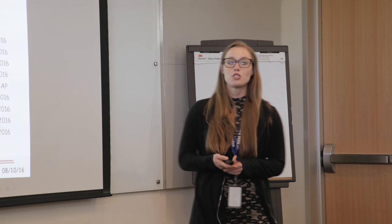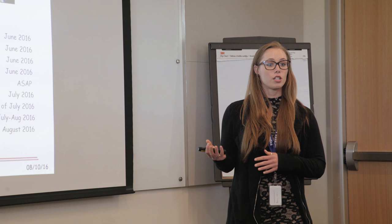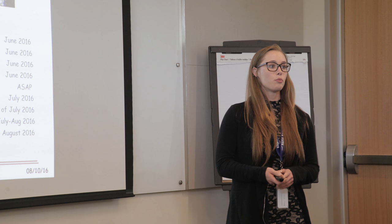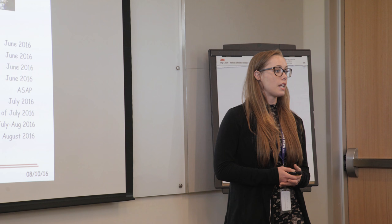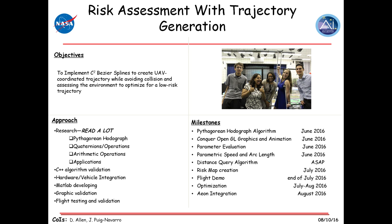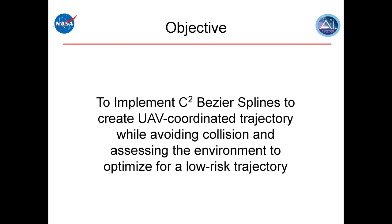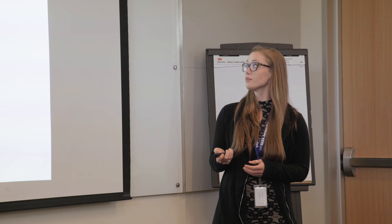Jeremy mentioned the agile approach we take here at the Autonomy Incubator, and I have an example of what one of our sprint charts would look like. This is my final sprint chart — I won't go through all the specific details since the information is covered throughout my presentation, but this is where my objectives, approach, and milestones for the summer are listed. My objective for the summer was to implement C2 Bezier splines to create UAV coordinated trajectories while avoiding collision and assessing the environment to optimize for a low-risk trajectory.